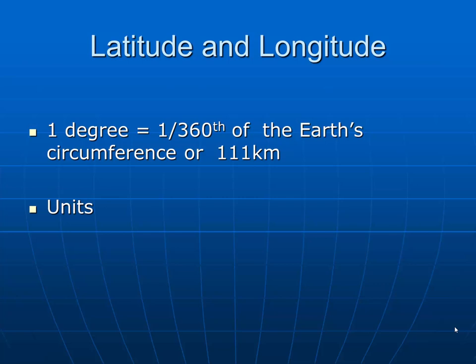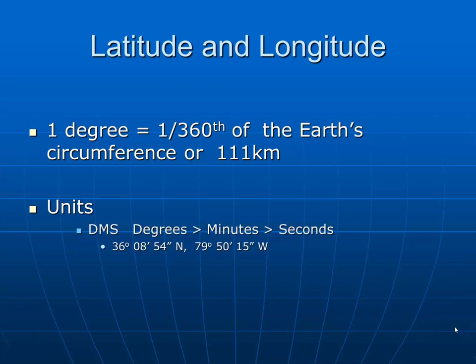There are three main systems that we use for mapping. One, sometimes referred to as DMS, or degrees, minutes, seconds, is a way to get more precise than just using the degrees of latitude and longitude. Each degree is divided into 60 equal parts called minutes, and each minute is divided into 60 equal parts called seconds. For instance, the latitude and longitude of my school is 36 degrees, 8 minutes, 54 seconds north, 79 degrees, 50 minutes, and 15 seconds west.